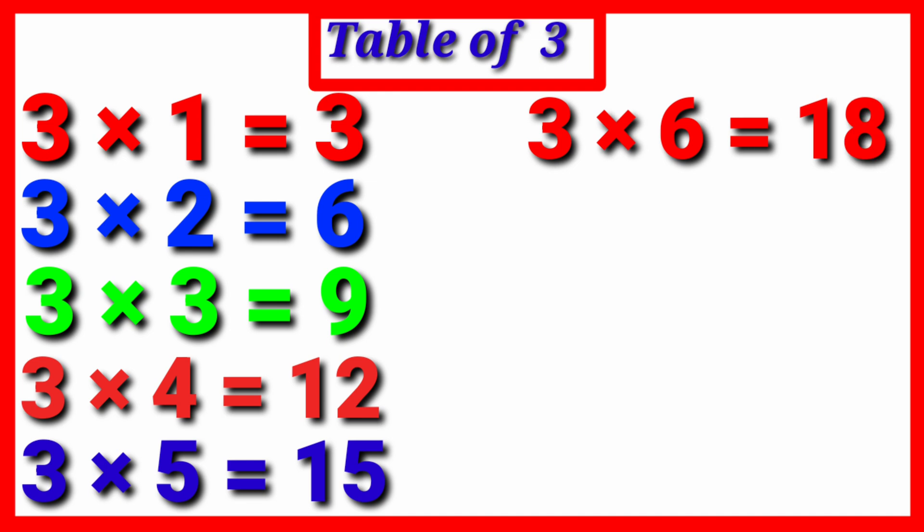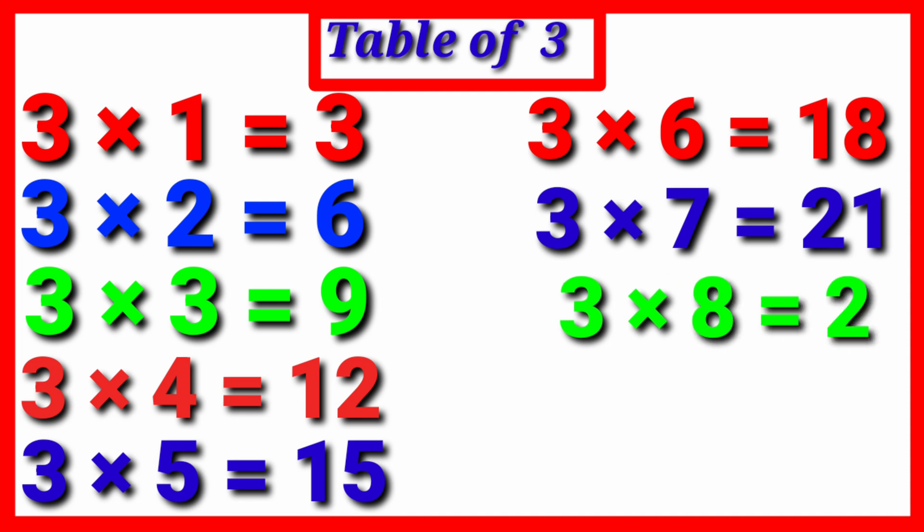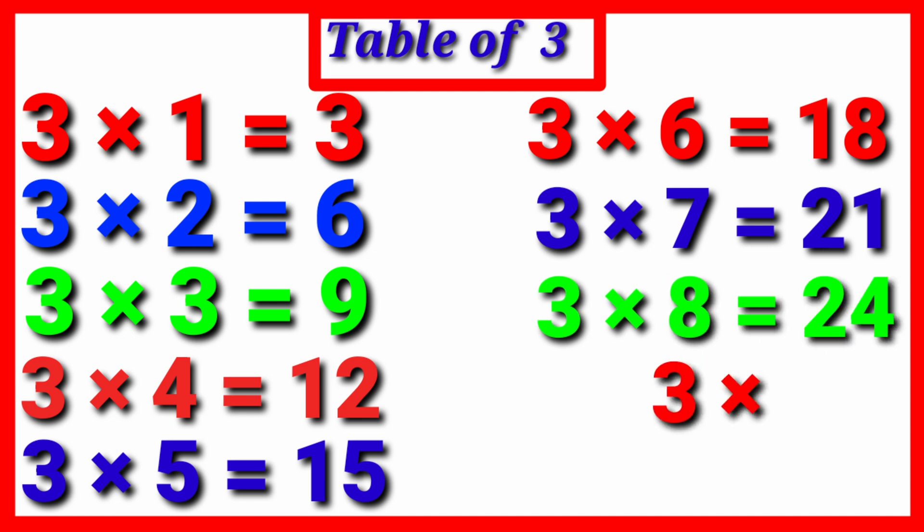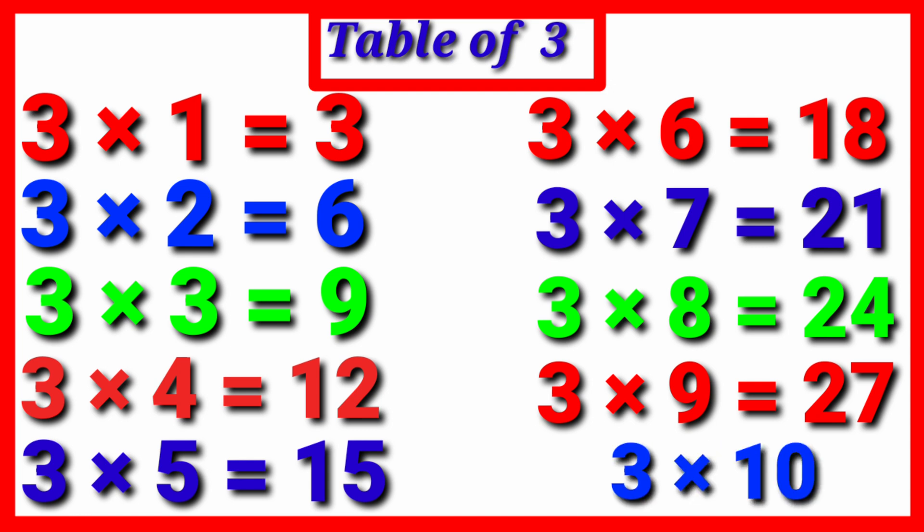Three sixes are eighteen. Three sevens are twenty-one. Three eights are twenty-four. Three nines are twenty-seven. Three tens are thirty.